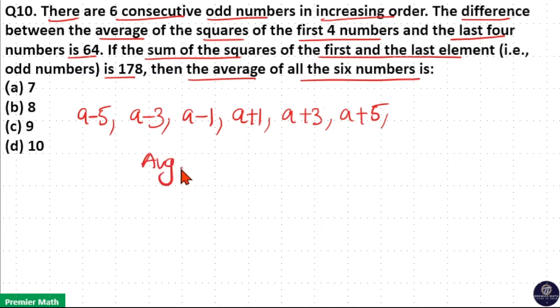Now if you take the average of these six numbers, you can see if you take the sum from a-5 to a+5, minus 5 plus 5 cancel, minus 3 plus 3 cancel, minus 1 plus 1 cancel. So total 6a's are there. So 6a divided by total number of numbers is 6. Now 6a by 6 is a. So average of these six numbers is a.